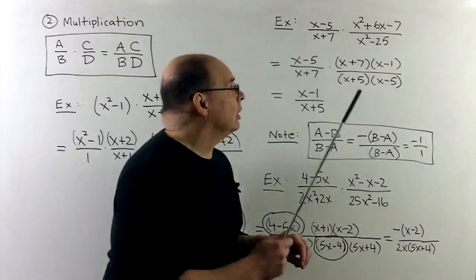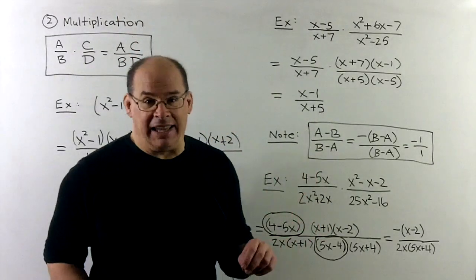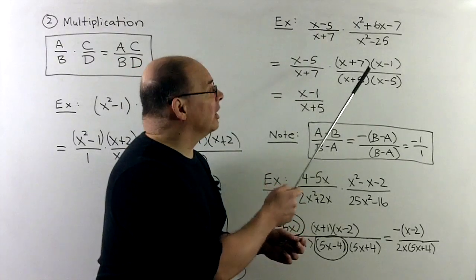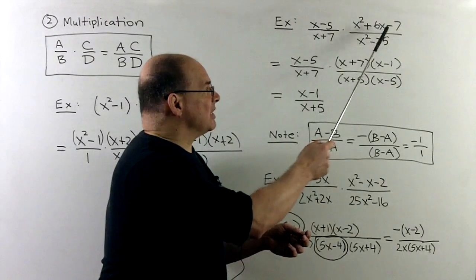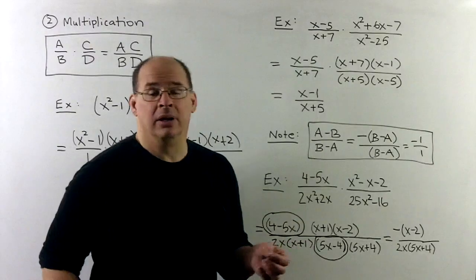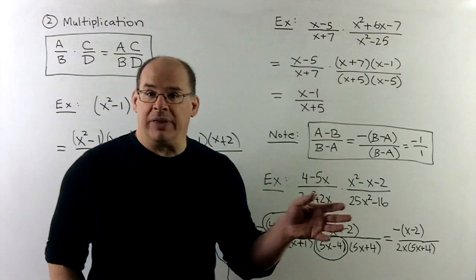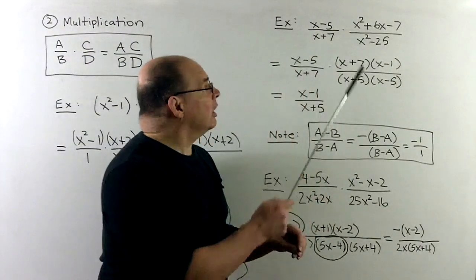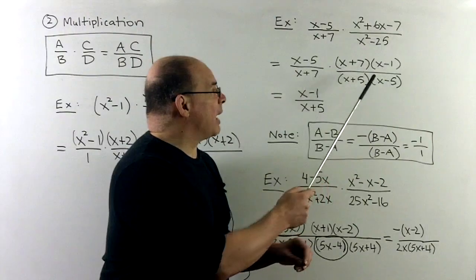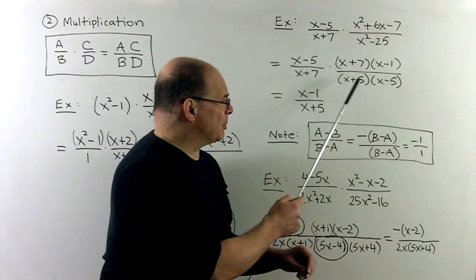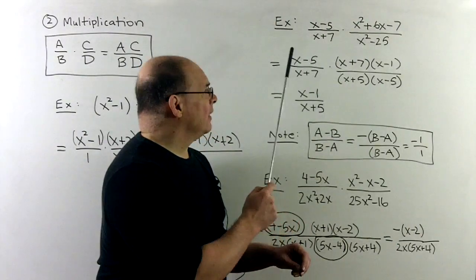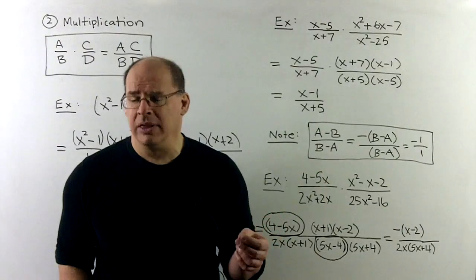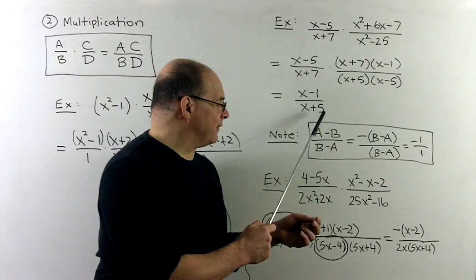More typical, we'll have two fractions being multiplied together. So, for instance, if I have x minus 5, x plus 7 as a fraction, we multiply by x squared plus 6x minus 7 over x squared minus 25. We could put everything with a single bar. I didn't do that here, but the bookkeeping is pretty clear. So, if we just factor, we get x plus 7, x minus 1 over difference of two squares, x plus 5, x minus 5. The x minus 5's cancel, the x plus 7's cancel, leaving us with x minus 1 over x plus 5.